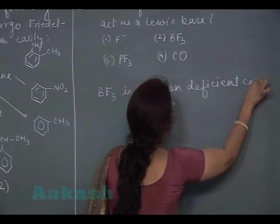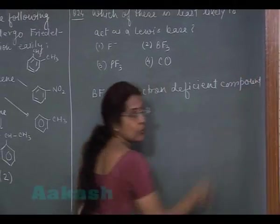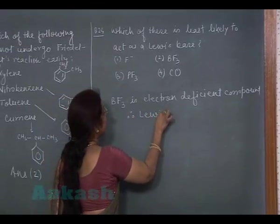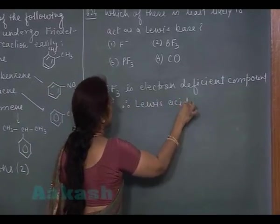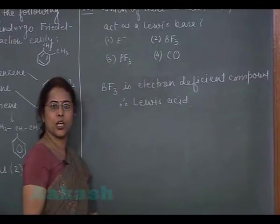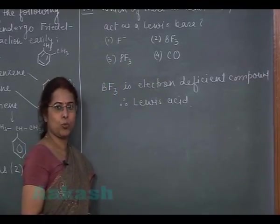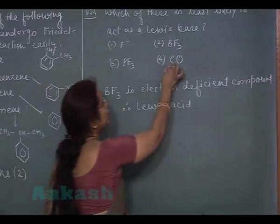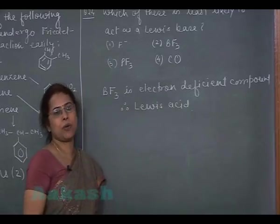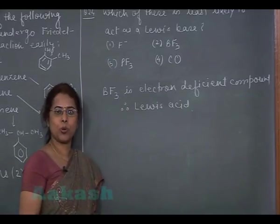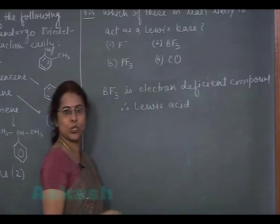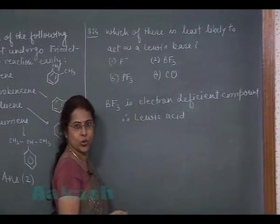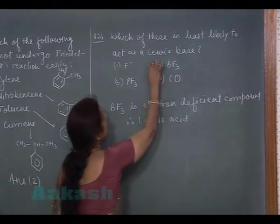An electron deficient compound behaves as Lewis acid. Third option, this is PF3. Phosphorus is having a lone pair electron. So this molecule can also behave as Lewis base. Fourth is carbon monoxide. Both carbon and oxygen are having lone pair electron. So they too behave as Lewis base. So in all these four options, only BF3 acts as a Lewis acid. So answer should be second option.